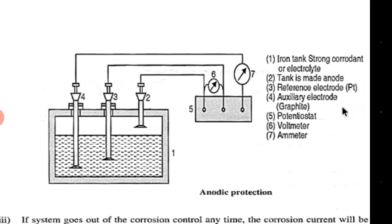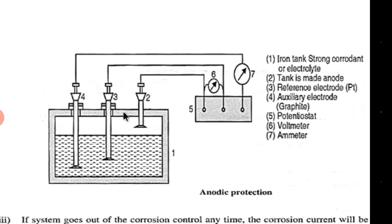The tank is made the anode and is connected to one electrode, which is not dipped in the solution — it is only connected to the tank which has to be protected. There are two other electrodes: the reference electrode, which here is platinum, and the auxiliary electrode, which is graphite. The reference and auxiliary electrodes are dipped in the solution.